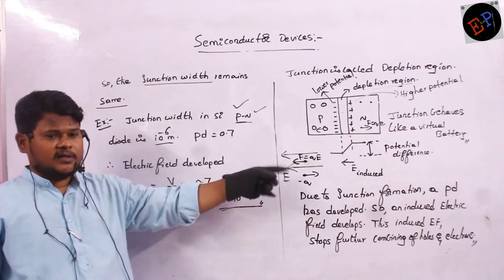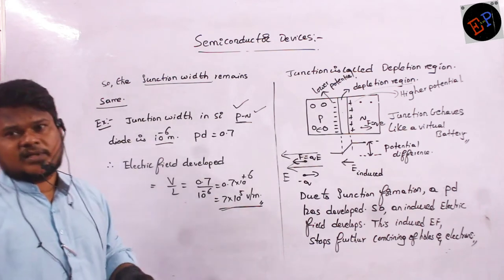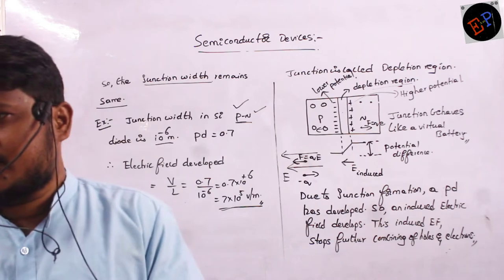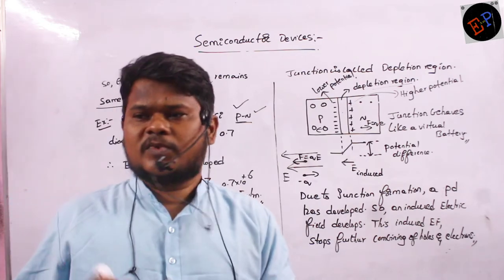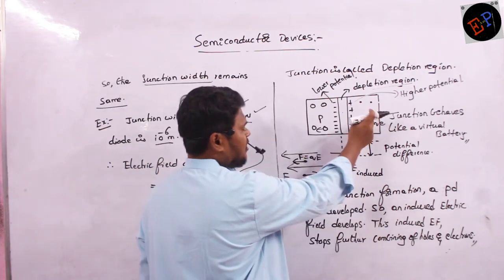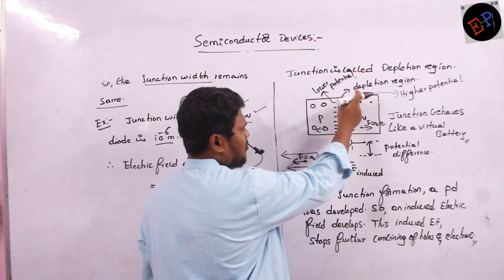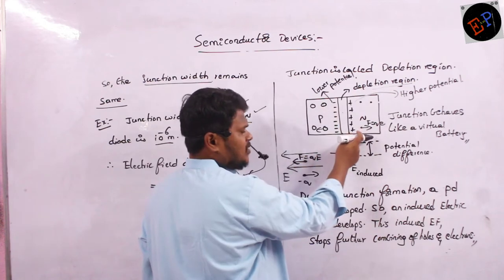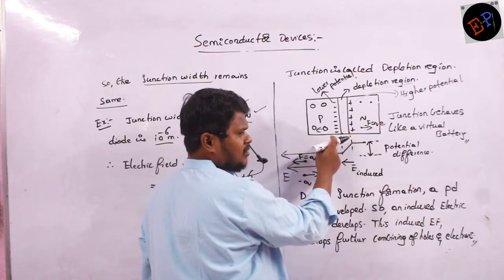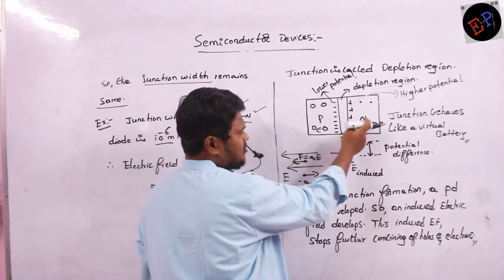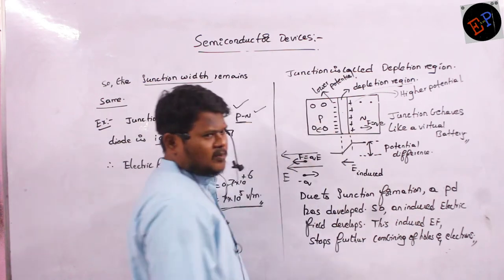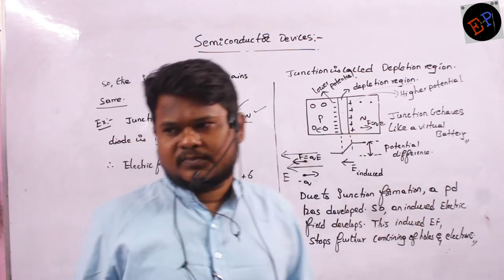Remember: on the N-type, positive charges develop. On the P-type, negative charges develop. So N-side is positive and P-side is negative at the depletion region. You can remember it like that.